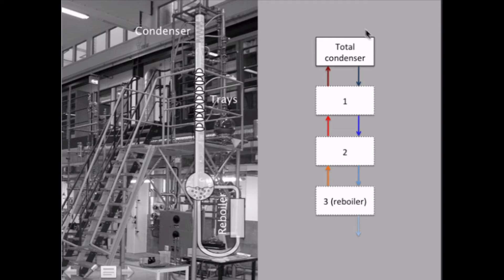The total condenser doesn't add anything to the separation — it just makes sure that all the rising vapor condenses, and then is led back to the distillation column. And in this setup you will be using,